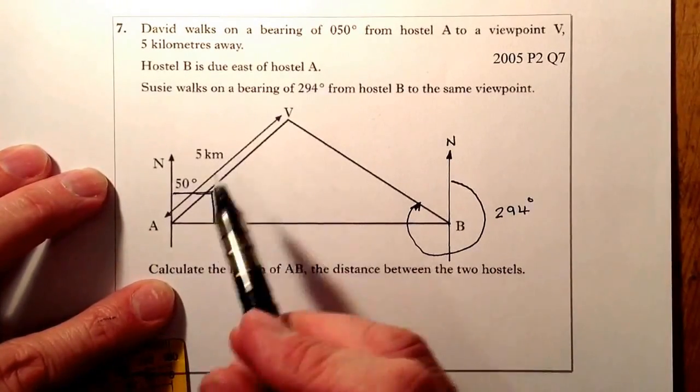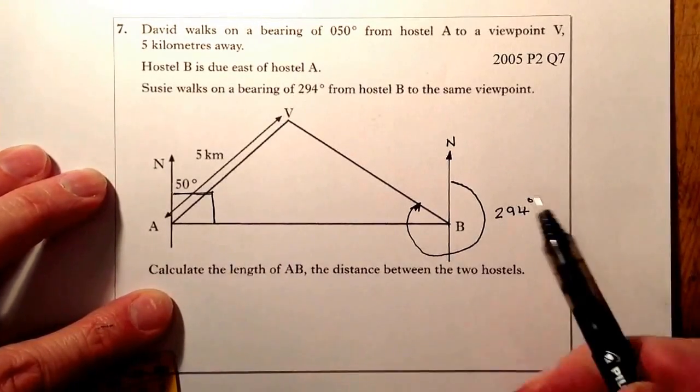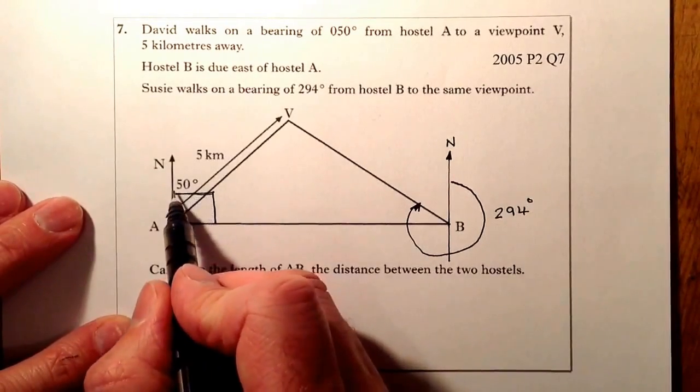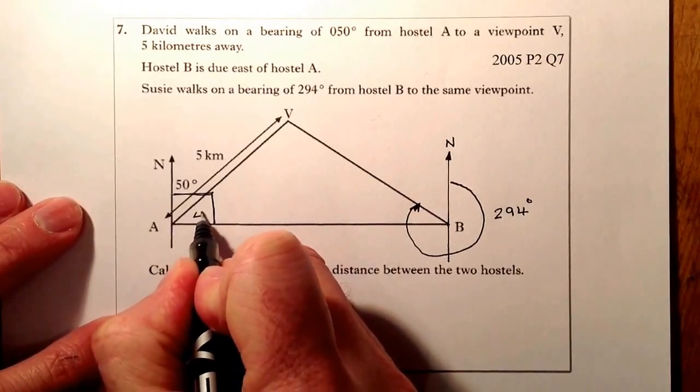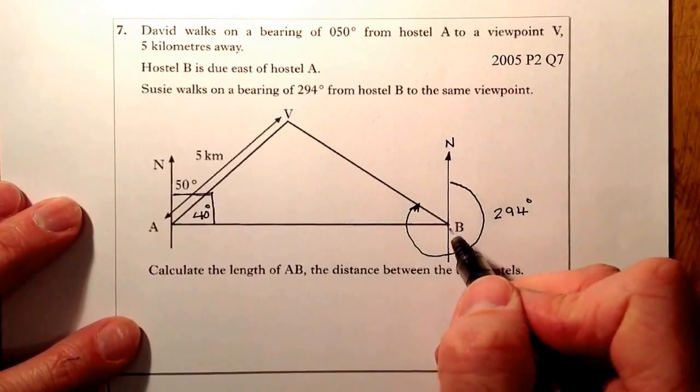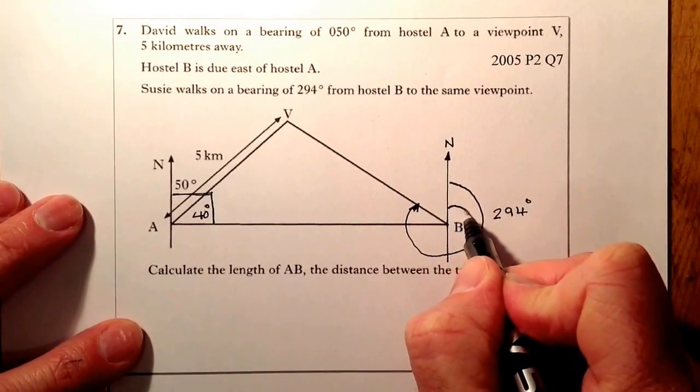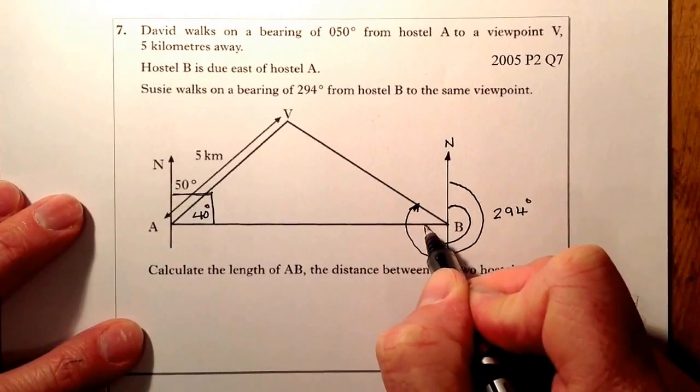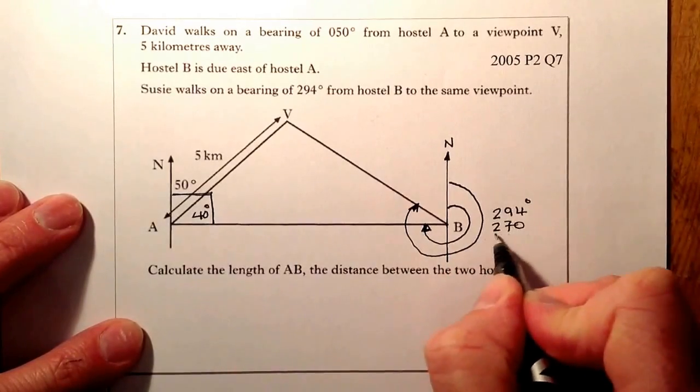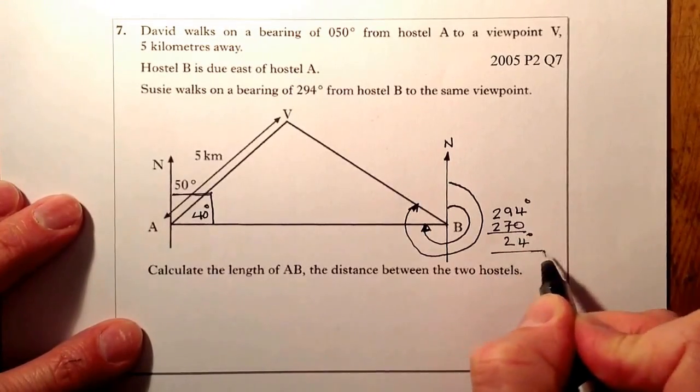So I'm needing some more information in this triangle to help me work out this length, if I'm going to use some sort of trigonometry for it. So what I've got here is if that's 50 degrees there, well, the angle in here must be 40 degrees. This angle here I can work out by looking at the angle from there all the way round to there. So that angle there, remember, is going to be 270 degrees. So the angle that's going to be in here will be left with 24 degrees in there.